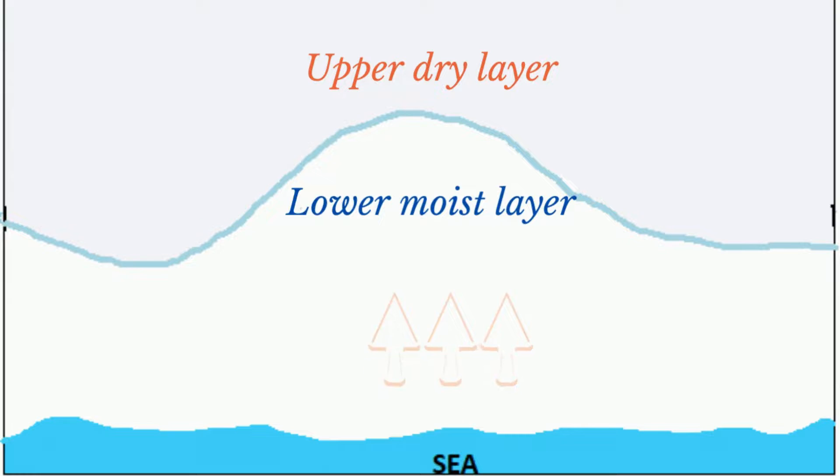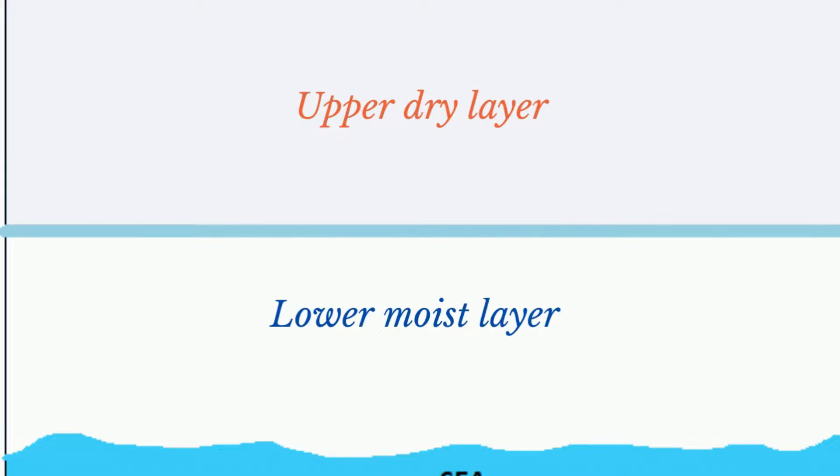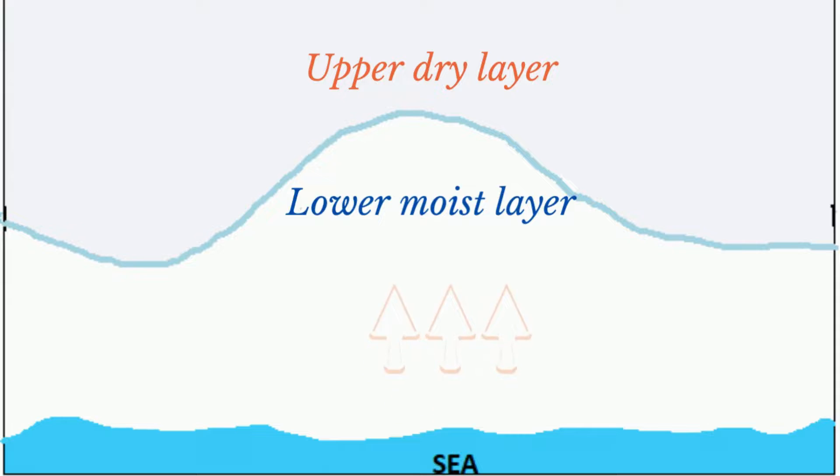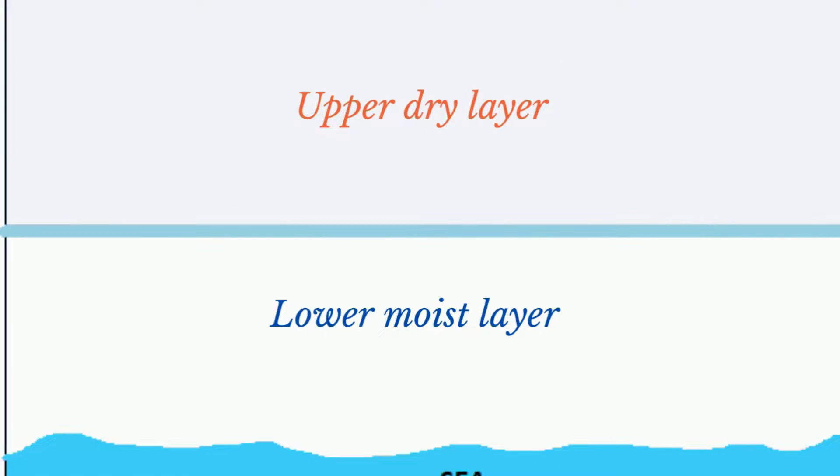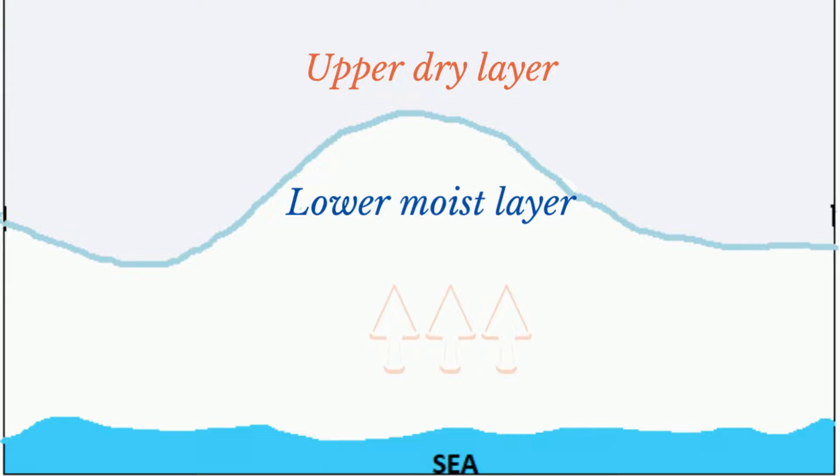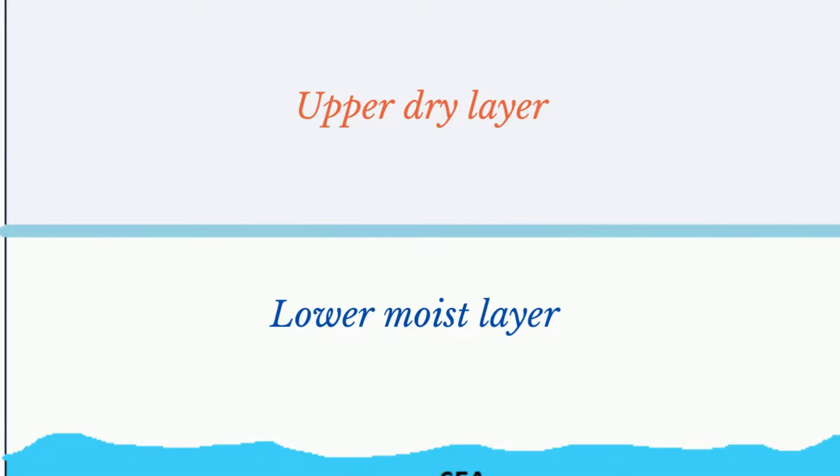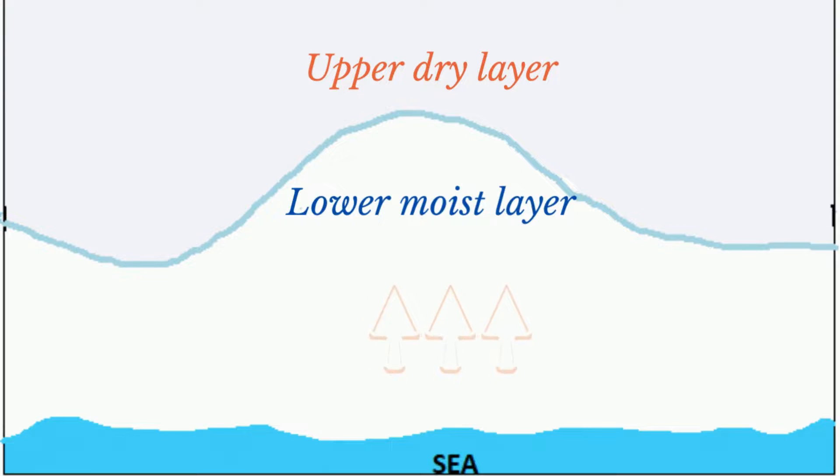Remember that the trade winds have an upper dry layer and a lower moist layer. At certain times of the year, the lower moist layer gets lifted. This lifting could be triggered from a variety of sources.